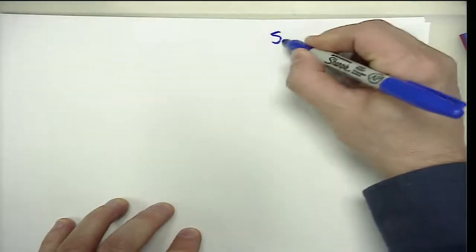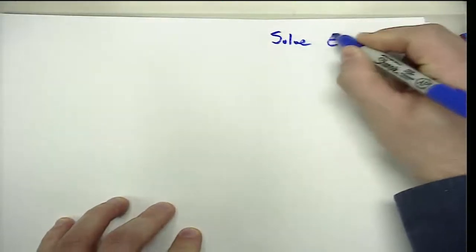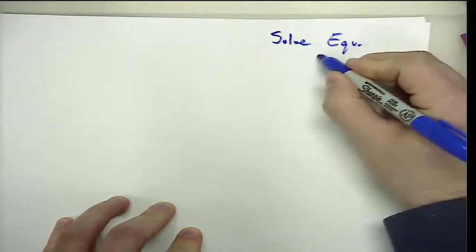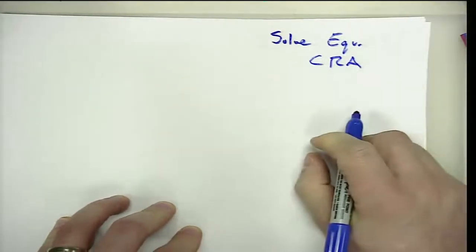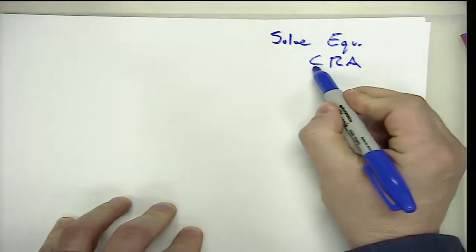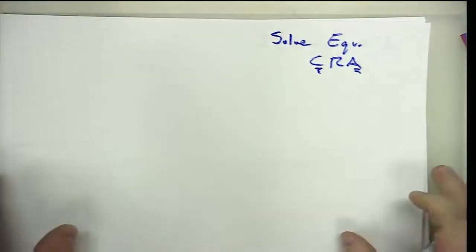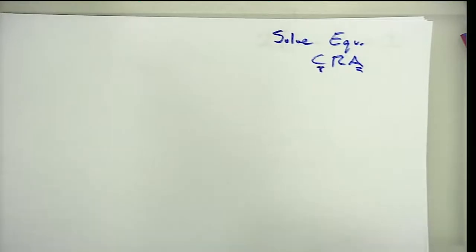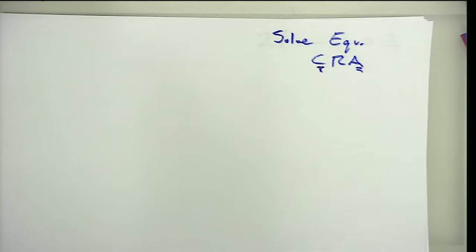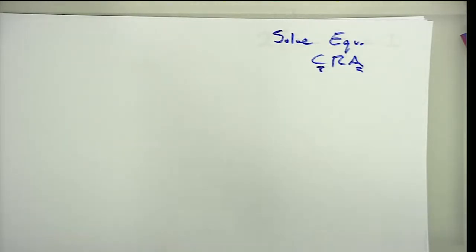Let's take a look at how to solve equations through a CRA sequence of instructions. In this video we're going to look at the concrete and how that ties to the abstract. If you haven't watched the video on simplifying expressions, watch that first, because when we're solving equations we're utilizing all those skills — combining like terms, the distributive property — and layering on the fact that we have two expressions equal to each other.